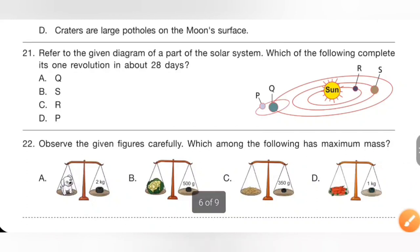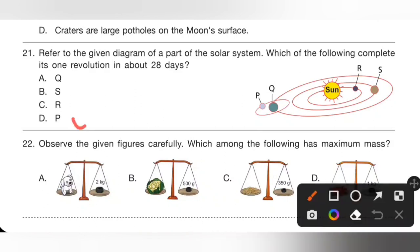Question 21: Refer to the given diagram of a part of the solar system. Which completes one revolution in 28 days? According to the diagram, R is Mercury, S is Venus, Q is Earth revolving around the sun, and P is the moon — the natural satellite of earth. The moon takes about 28 days to complete its one revolution. Option D, P, is the correct answer.